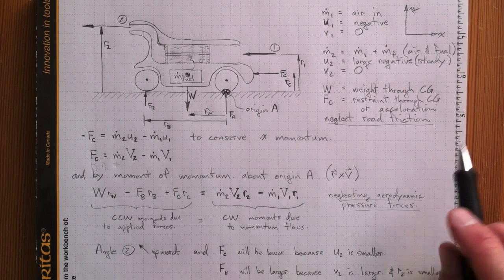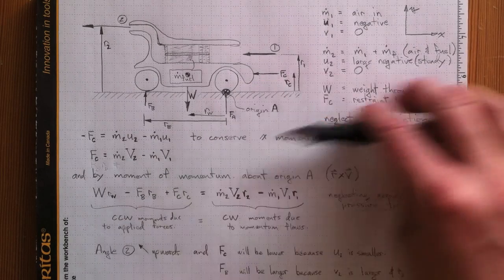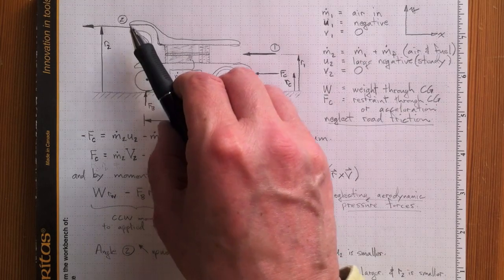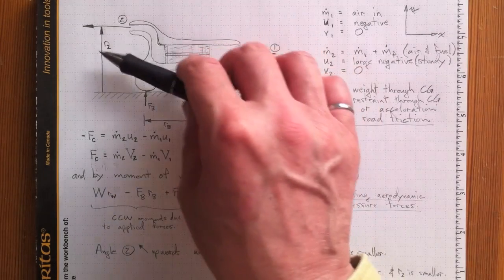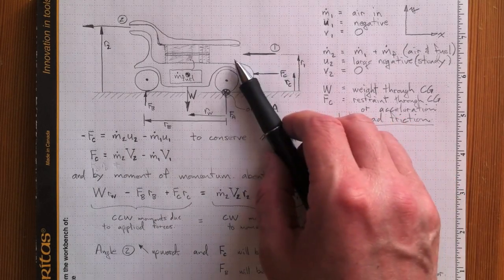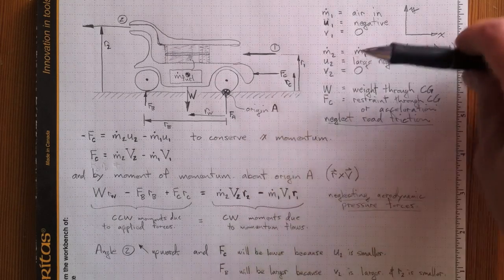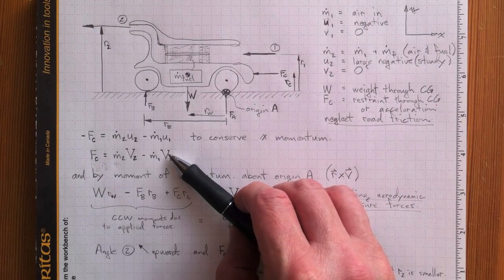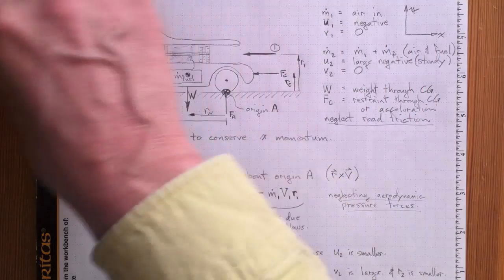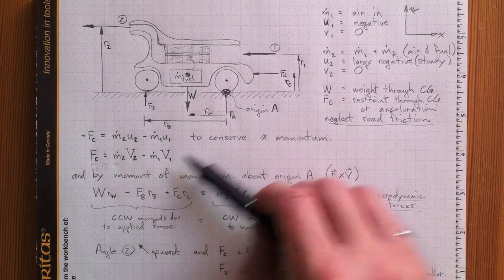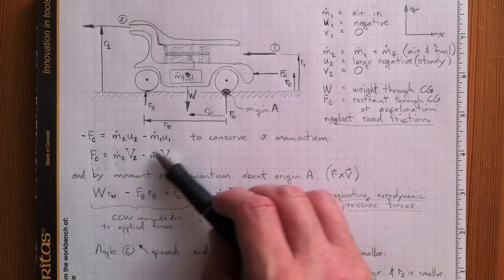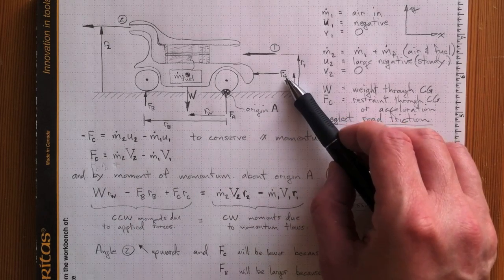So neglecting all of those, then what we wind up with is negative Fc, that's the force in the x direction, is negative Fc equal to M dot 2 U2, mass flow at 2, times the velocity component in the x direction at 2, which is a negative number, minus M dot 1 U1. Again, U1 is a negative number. So if we just go to the overall magnitudes of the velocities, these capital V's here, then we wind up with Fc equal to M dot 2 V2, the overall velocity of the stuff coming out of here, a positive number, minus M dot 1 V1, the overall velocity that it came in with. So this is the difference between the momentum going out the back and the momentum going in the front, and that's the thrust force, and it's got to be offset by Fc.